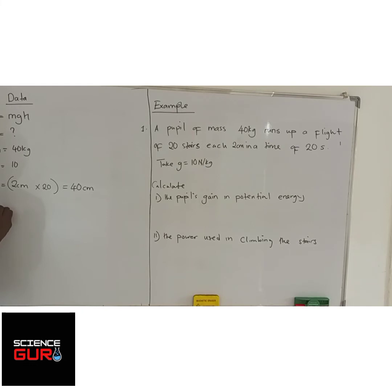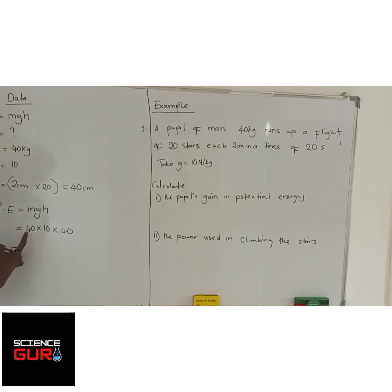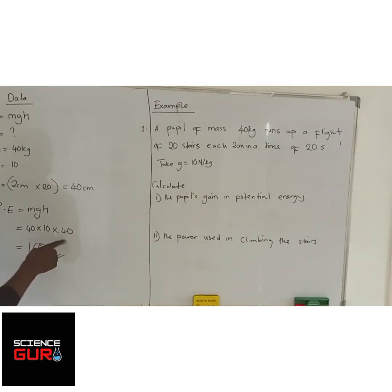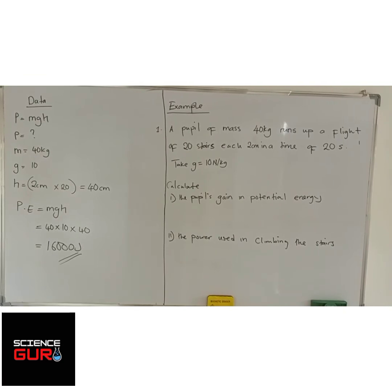So now we can find the potential energy. P is equal to mass times g times height. Our mass is 40, gravitation is 10, and the height is 40 cm. So potential energy equals 40 times 10 times 40, which gives us 16,000 joules. You have found your answer.